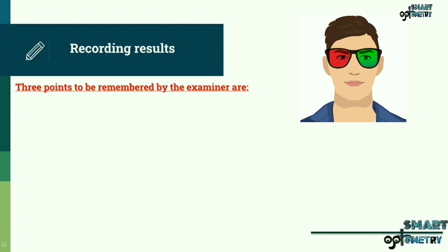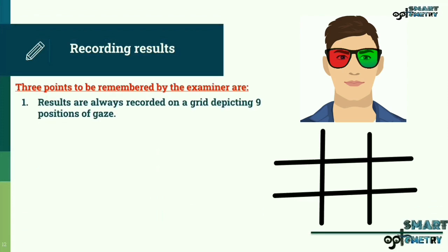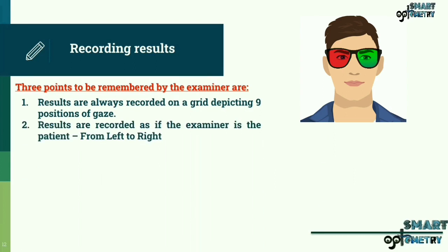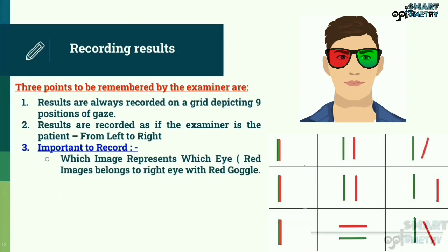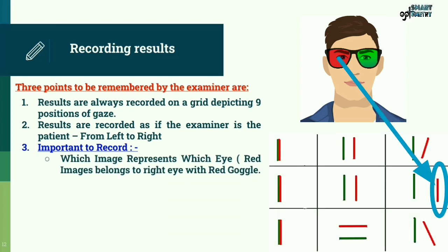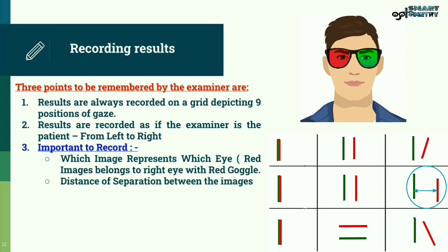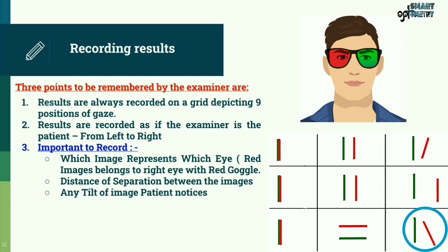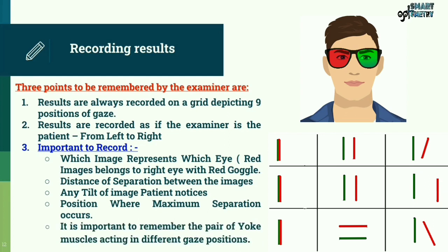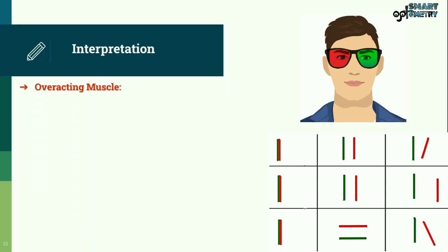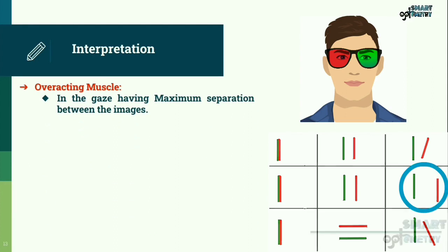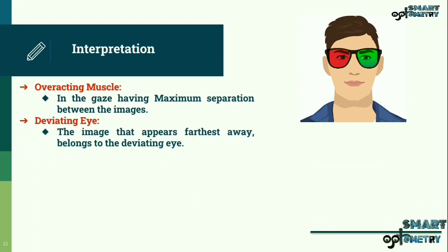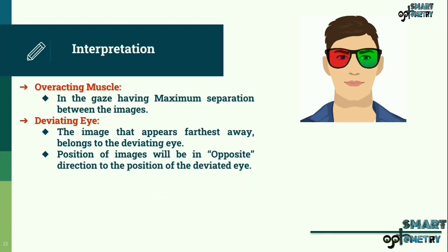Three points to be remembered by the examiner: Results are always recorded on a grid depicting nine positions of gaze. Results are recorded as if the examiner is the patient, i.e., from left to right. It is important to record which image represents which eye — the red image belongs to the right eye with the red goggle — along with the distance of separation between the images, any tilt the patient notices, the position where maximum separation occurs, and the pair of yoke muscles acting in different gaze positions. In the gaze having maximum separation, the overacting muscle and the deviating eye should be identified. The image that appears furthest away belongs to the deviating eye, and the position of images will be in the opposite direction to the position of the deviated eye.